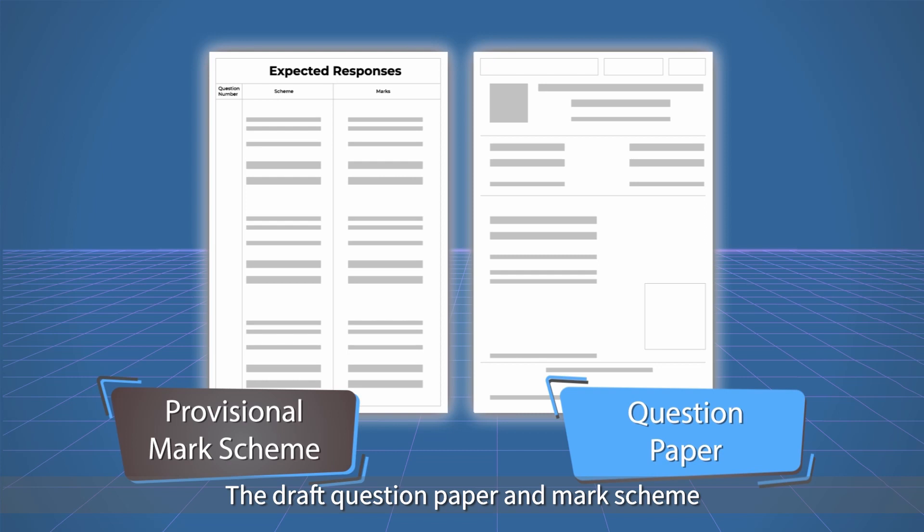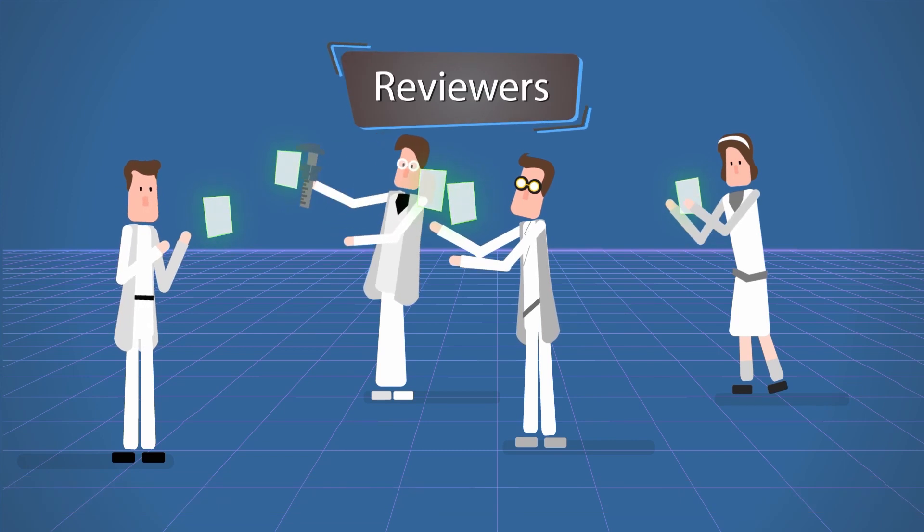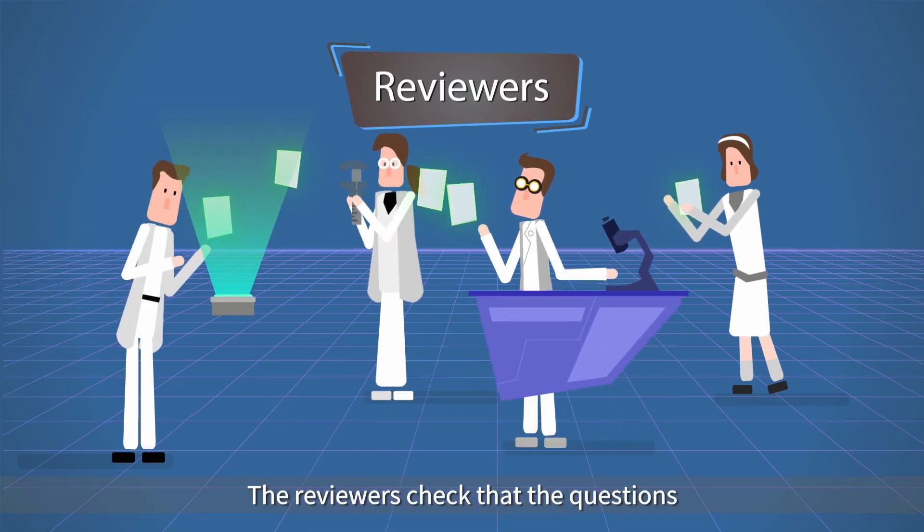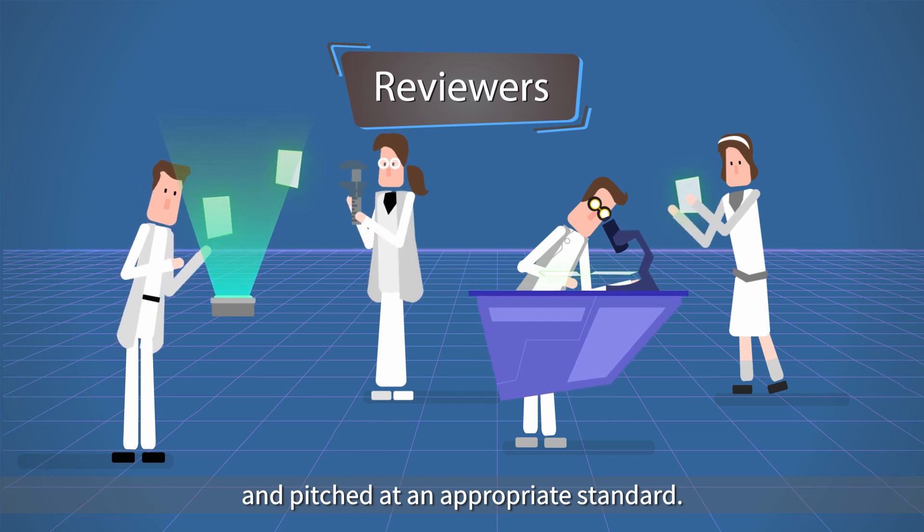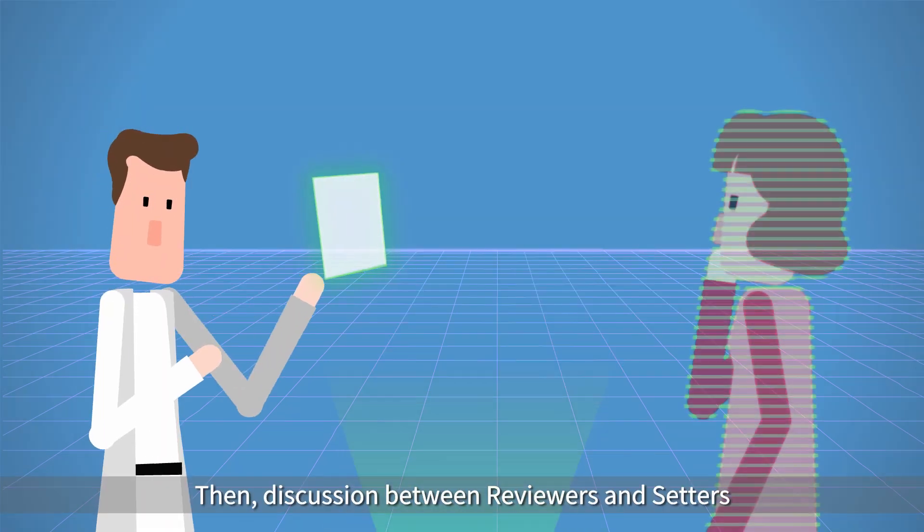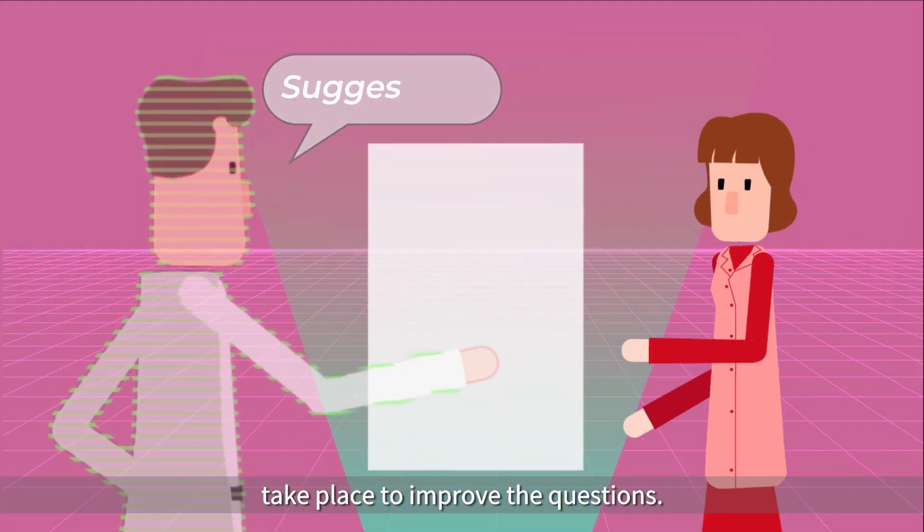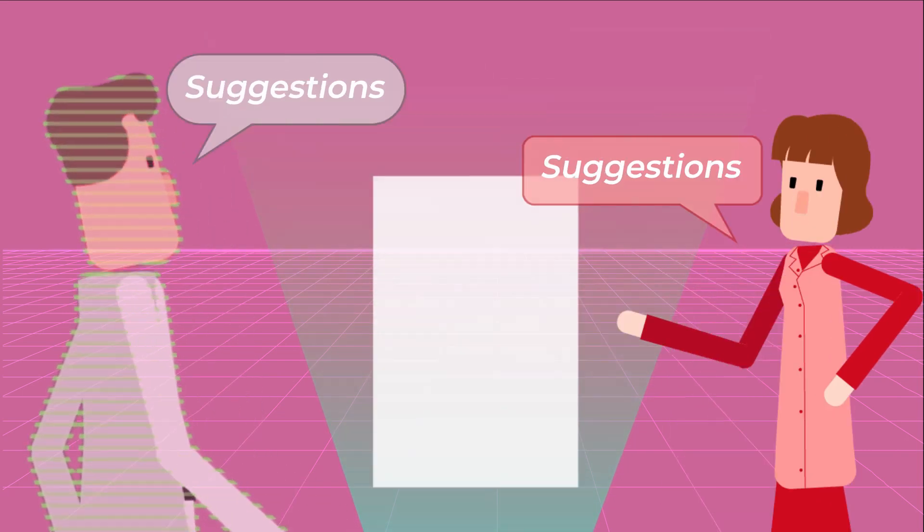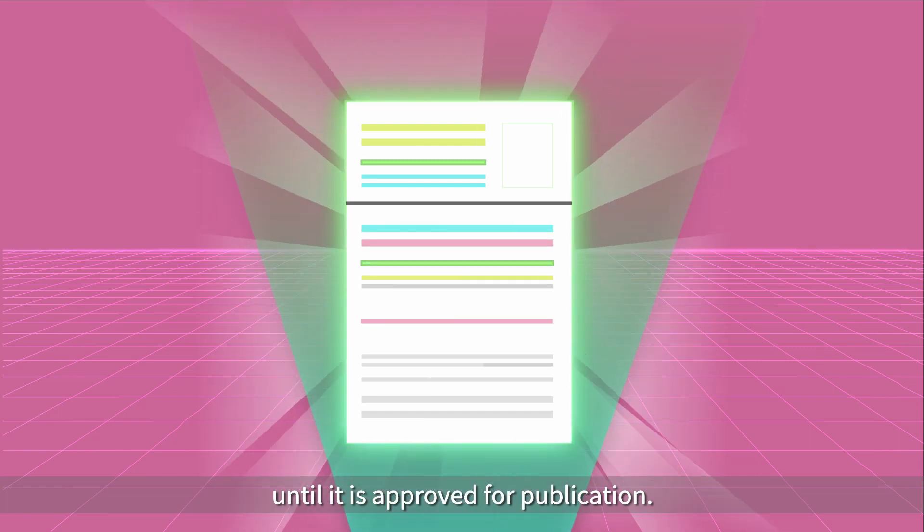The draft question paper and mark scheme are reviewed by a separate panel of reviewers. The reviewers check that the questions are aligned to the syllabus and pitched at an appropriate standard. Then, discussion between reviewers and setters take place to improve the questions. The process improves the question paper step-by-step until it is approved for publication.